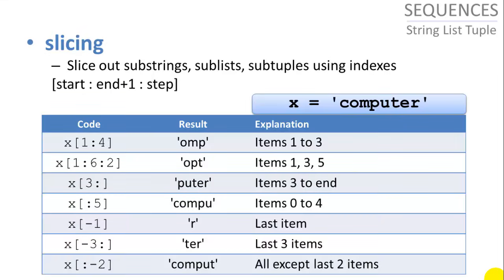And in our list, if we say we want item with index one, that's going to give us cow, the second item in the list. Slicing allows us to slice out substrings and sublists and subtuples using indexes. And the syntax is using square brackets, start, end plus one, and step. And these are all optional. I'll cover some examples and explain that.